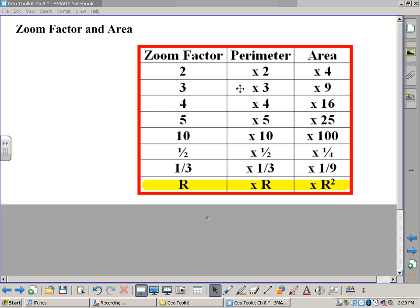So here we are again for the next toolkit entry. This one's called Zoom Factor and Area. And there's a chart over here that I'd like you to go ahead and copy down and put into your toolkit. So one column is Zoom Factor, one's Perimeter, one's Area.